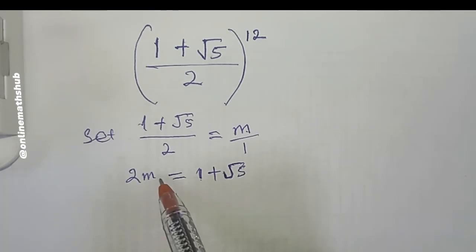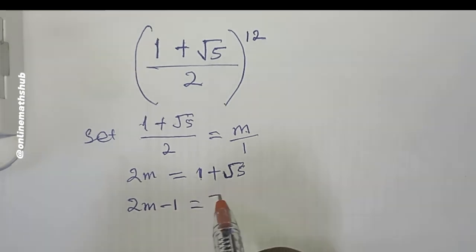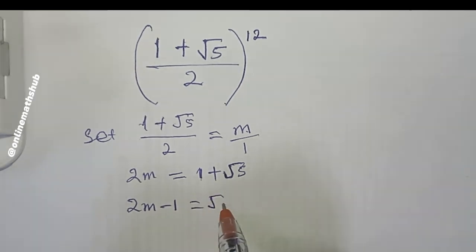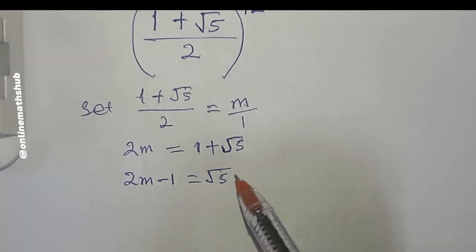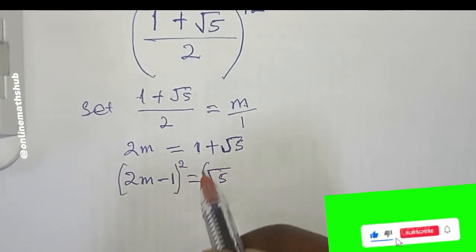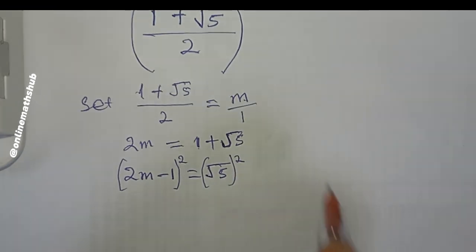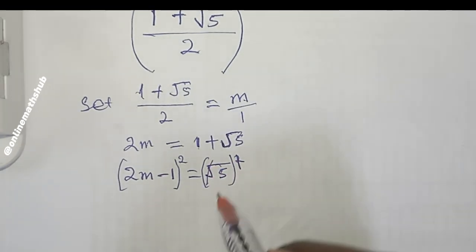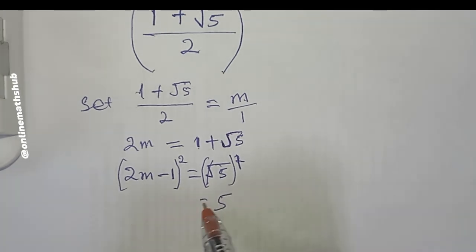So we have 2m = 1 + √5. I can bring the 1 to the left-hand side so that 2m − 1 = √5. Moving on, I'm going to take the square of both sides so I can remove this square root. Squaring √5 gives 5 on the right side.